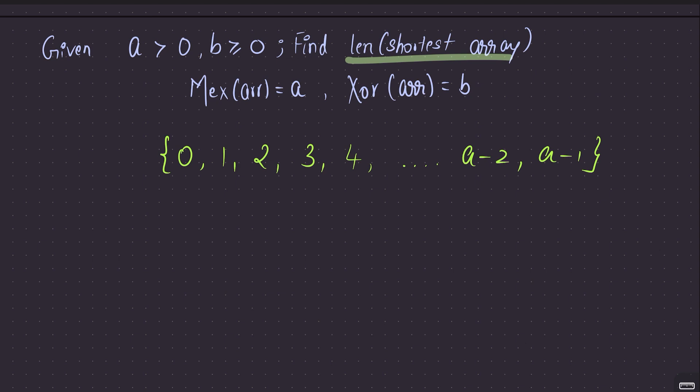So what does this tell you? The length of your answer is at least a, since there are a elements from 0 to a minus 1. You need at least a elements. Let me call this the base array. You need to have at least these many elements to satisfy the MEX condition.